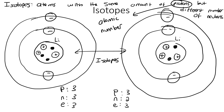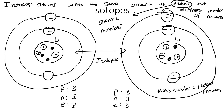Because the number of neutrons is different, that means the mass numbers are also different. What is mass number? Mass number is the number of protons plus the number of neutrons. So for the first atom, the mass number would be 3 plus 3, which is 6. For the second, it would be 3 plus 2, which is 5. So isotopes are also going to have different mass, and that is because of the different number of neutrons.